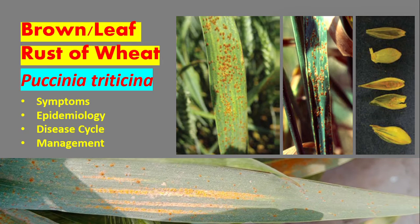Assalamu alaikum students. Our next topic is brown rust or leaf rust of wheat. The causal organism is Puccinia triticina, order Uredinales, family Pucciniaceae.